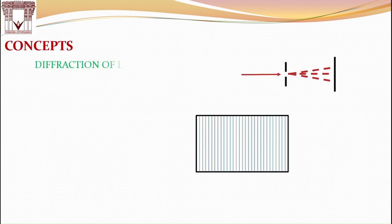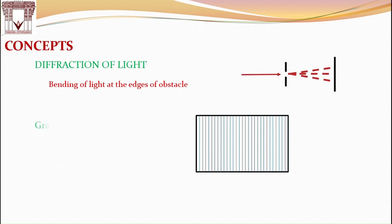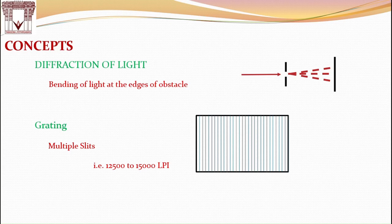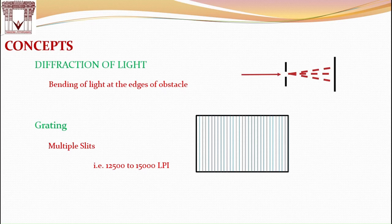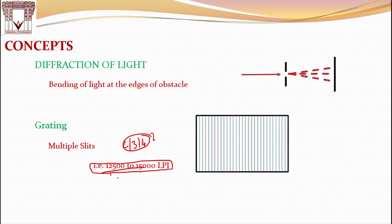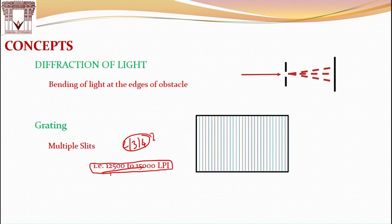And for that, first we will see the concept, the diffraction. You all know diffraction is nothing but a bending of light at sharp edges. And another new word coming to the picture here, grating. Grating is nothing but multiple slits. Multiple means how many? Is it two or three or four? They are dealing with 12,500 to 15,000 lines per inch or slits per inch. We are going to deal with such kind of grating.